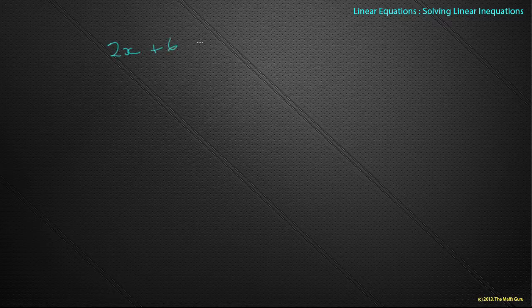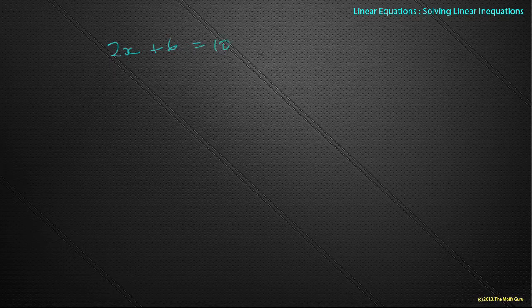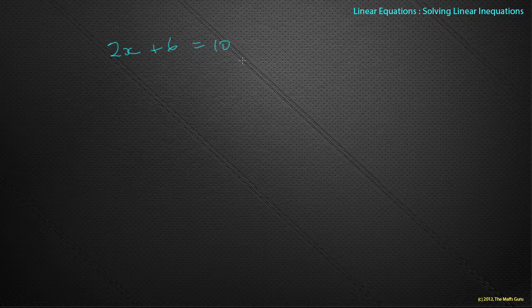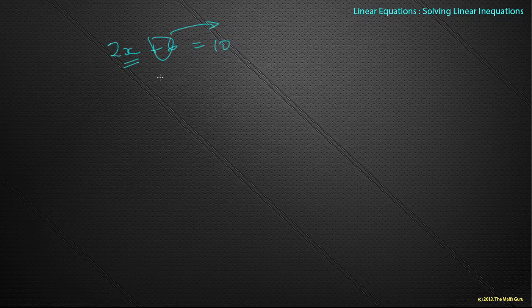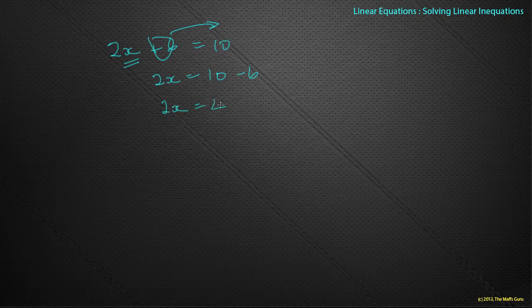2x plus 6 equals 10. That seems like a nice enough equation. What does it actually mean? In its simplest form, it means that this x value can take one value, it's got one answer. If we just quickly roll through: 2x is equal to 10 minus 6, so 2x equals 4 and x equals 2. That value of x is equal to 2.